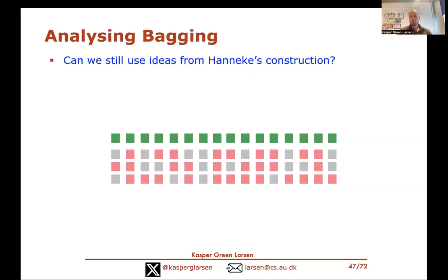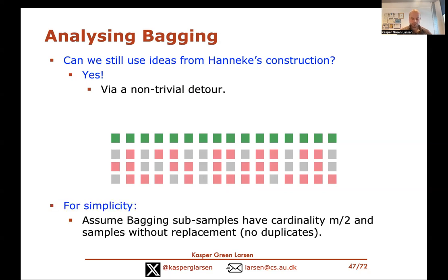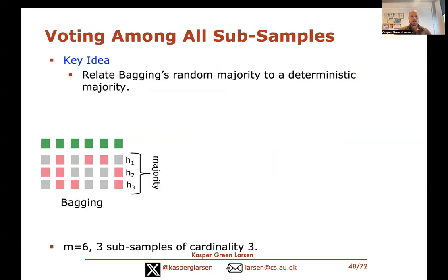So what do we do instead? We ask: can we still use the ideas in Hanneke's construction? The answer is yes, but through a non-trivial detour. To keep figures simple, I'll modify bagging slightly for visualization: subsample exactly half the data without replacement instead of with replacement, avoiding duplicates. The proof works for this case and can be adapted to the full bagging case.